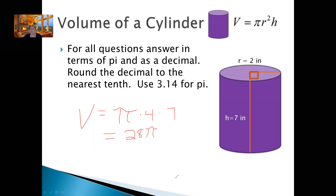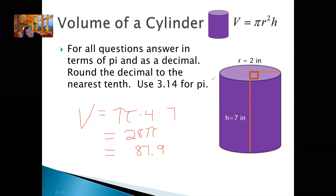But if they want you to use 3.14 for pi, you would multiply 28 times 3.14. What is 28 times 3.14? 87.92. It says round it to the nearest tenth, so I'm going to round it to 87.9. I use 3.14 for pi because that's what they're asking me to do. If they ask me to use 3.1415 or a different decimal place, then my answer might be off a little. So 87.9 is to the nearest tenth.